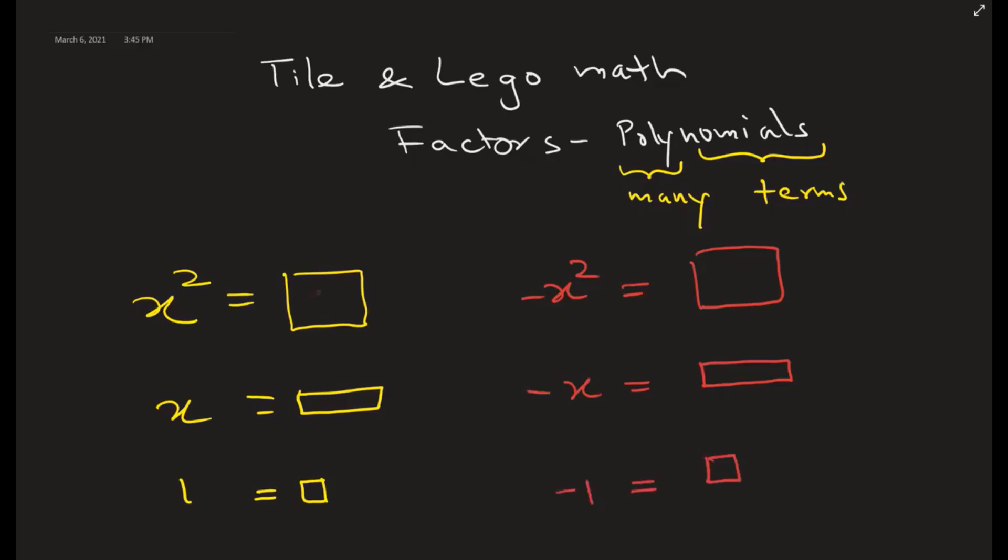Similarly, on my left I have yellow colors for the positive values of each: x squared, x, and unit 1. So that's the understanding we need to use the tiles or the Lego kind of method.